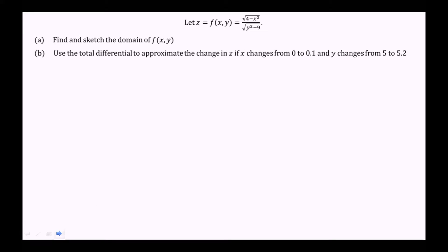First we want to find and sketch the domain of f(x, y). From the function, we know that the quantity 4 minus x squared must be greater than or equal to 0, because we can't have a square root of a negative number. So the inner part of the square root must be greater than or equal to 0, meaning 4 is greater than or equal to x squared, so x is greater than or equal to negative 2 and less than or equal to 2.